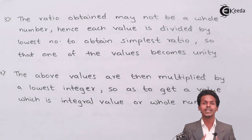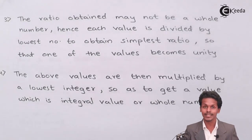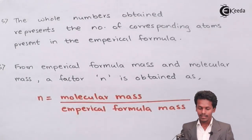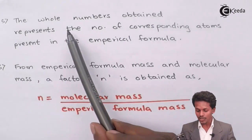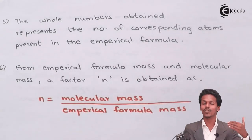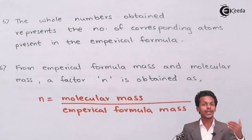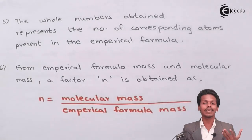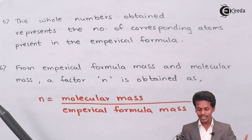This type of analysis will be much easier to understand when we do numerical examples in the future. Step 5: The whole numbers obtained represent the number of corresponding atoms of each element present in the empirical formula — for carbon, hydrogen, oxygen, and any other elements present.